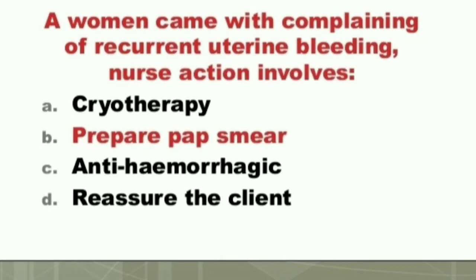Question: A woman presents with complaints of recurrent uterine bleeding. The nurse's action should be: A) Cryotherapy, B) Prepare Pap smear, C) Antihemorrhagic, D) Reassure the patient. The answer is B) Prepare Pap smear. For recurrent uterine bleeding, the nurse should prepare a Pap smear.